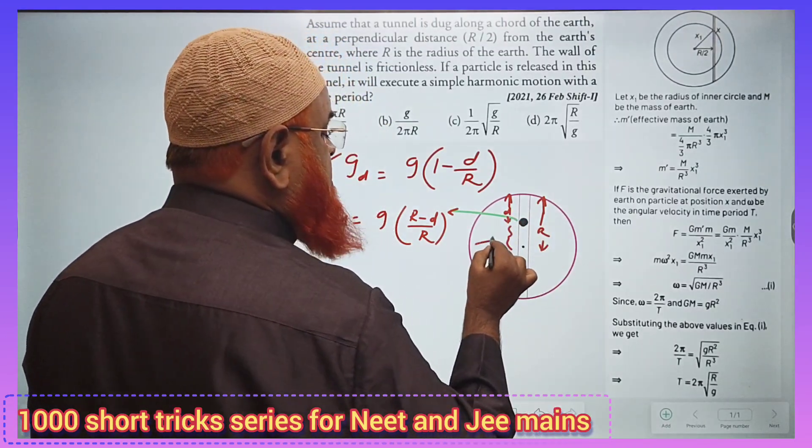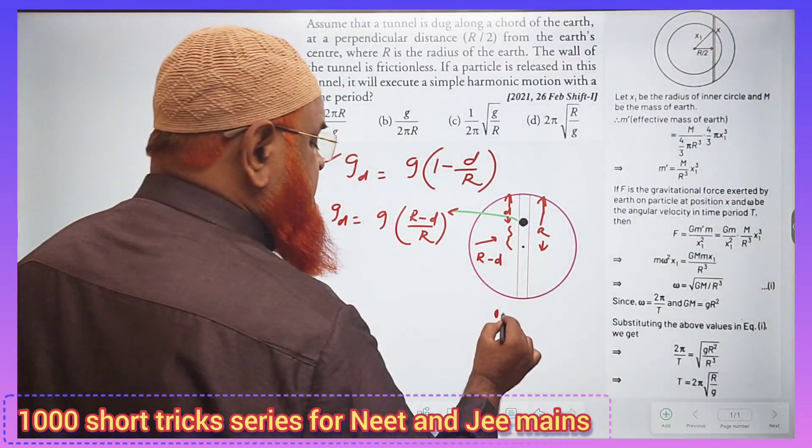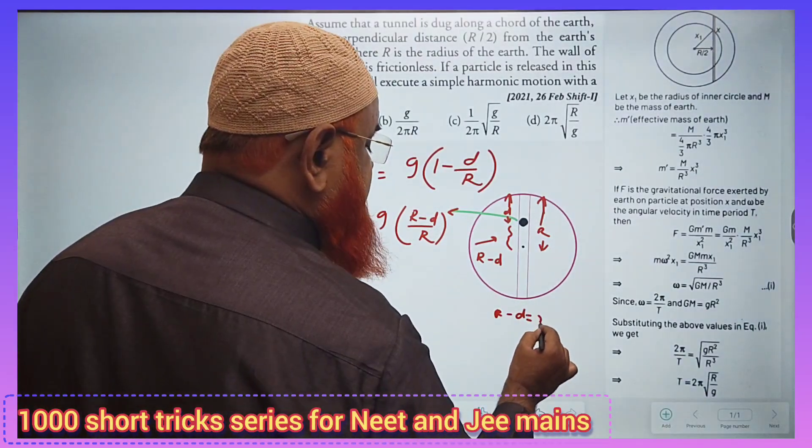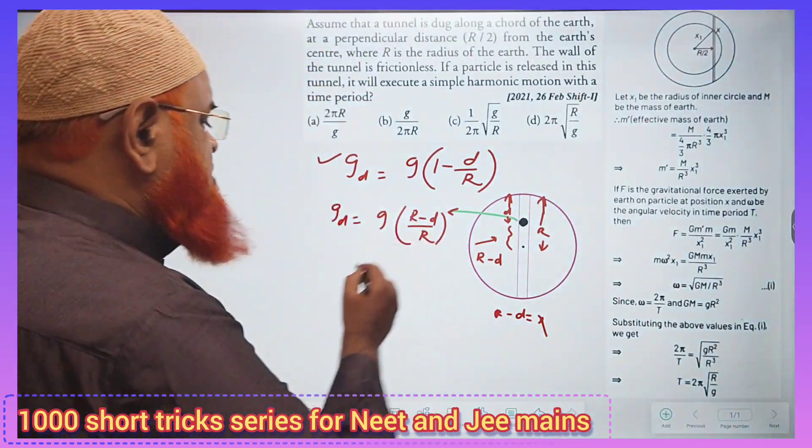Then what is the remaining part? The remaining part is R minus D. Let us take R minus D as x, so R minus D can be considered as x here.